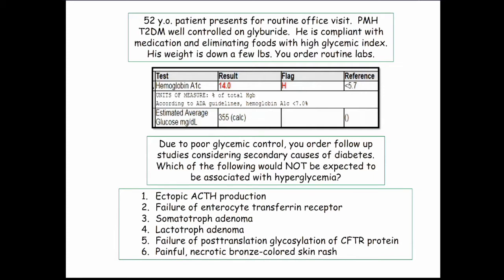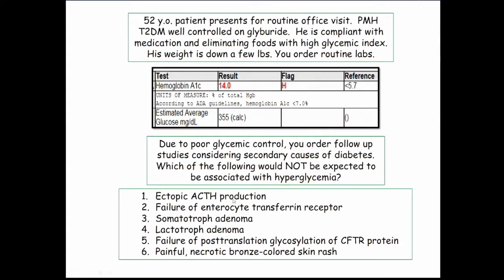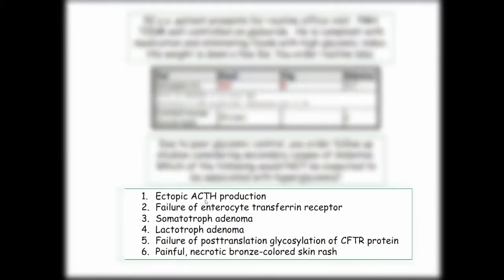Here's a guy who had been doing great. He comes in and has an A1C of 14% — that's not so good. He was still eating fine. With poor glycemic control, you order follow-up studies considering secondary causes. So we have a diabetic who is now poorly controlled — what else is going on? This question is looking at secondary causes of diabetes. Ectopic ACTH production will drive cortisol and glucose, causing hyperglycemia.